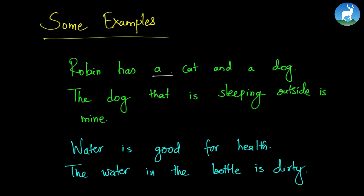Robin has a cat and a dog. So, any cat and any dog — we are not talking about a particular dog or a fixed breed. We are talking about one cat and one dog in general.